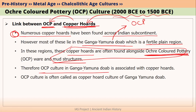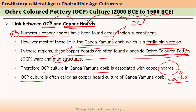OCP culture in Ganga Yamuna Doab is associated with copper hoards. A hoard is nothing but a group of copper items which were generally buried together. That is called a hoard — sometimes it is also called a cache, especially if it is buried. So the other name for OCP culture is 'copper hoard culture of Ganga Yamuna Doab.'